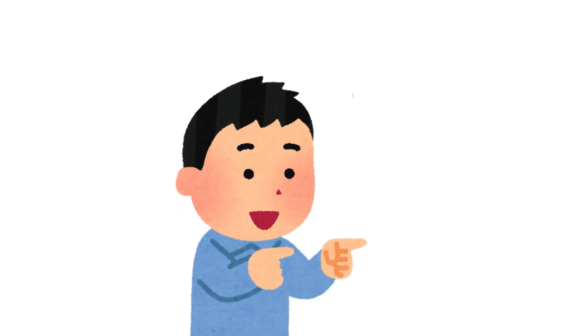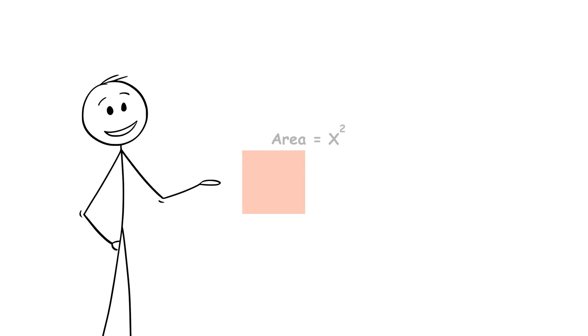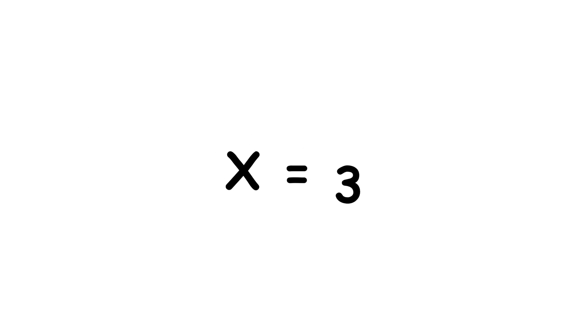Now, what number times itself gives you 9? To visualize this, one idea you might have is to draw a literal square with side lengths of x. This square must have an area of x squared, which we know is 9 in this case. From here, the solution that may be immediately obvious to you is x equals 3.